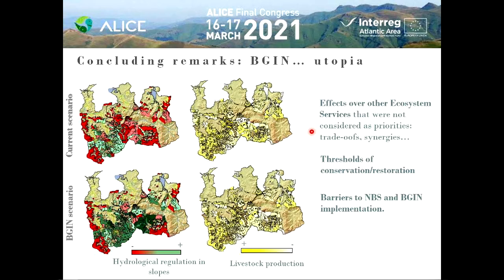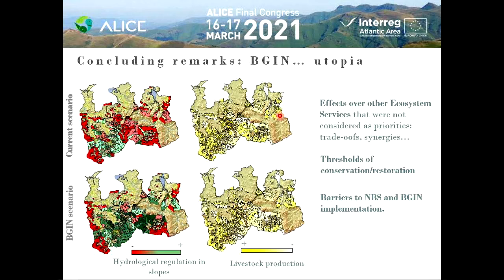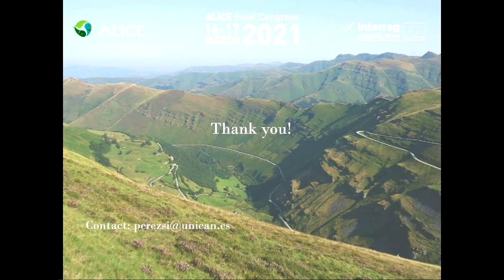The last thing I would like to say is that what we have built is a BGIN utopia, because we only tried to maximize the target ecosystem services selected, without taking into account the influence over other land uses and their associated ecosystem services. To bridge this gap, as following steps, we need to consider different relationships between ecosystem services — the trade-offs and synergies — to also identify the different barriers to implementing these instruments for landscape planning. Thanks very much for your attention.